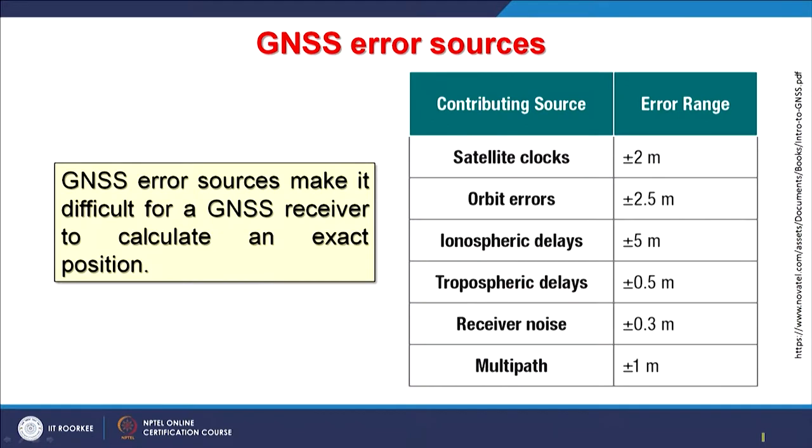Let us look at the possible sources of errors. It is not necessary that all errors will come at the same time. There might be 2 or 3 errors from this list playing some role at a particular time, while at other times different errors might be present. If these were permanent or regular errors then they can be corrected. Systematic errors can be corrected easily, but non-systematic errors that vary time to time, location to location, with different geographic areas and different atmospheric conditions, are very difficult to correct.